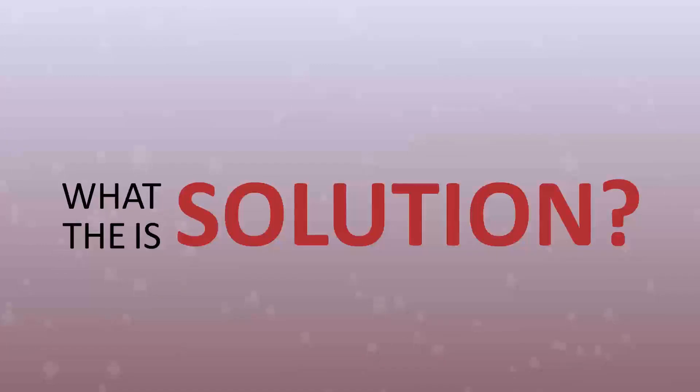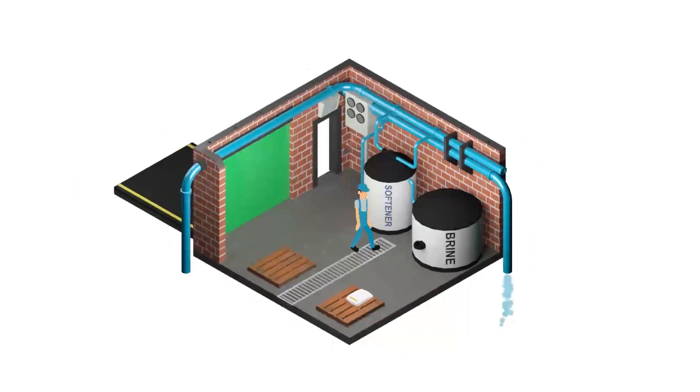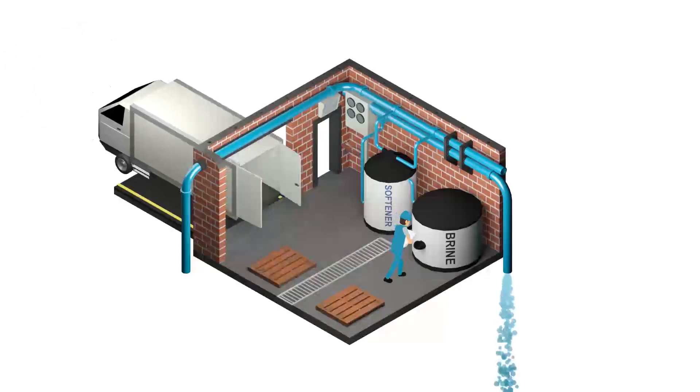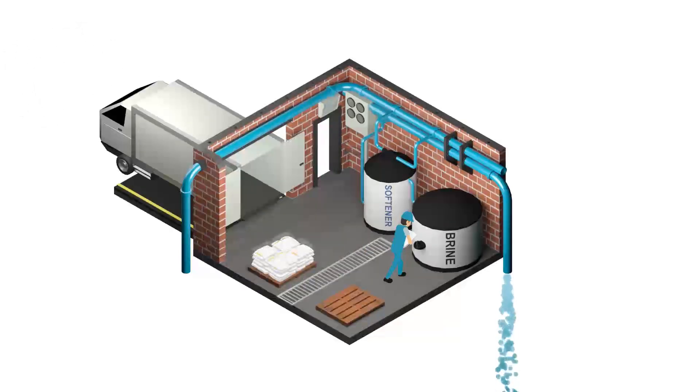Sticking your head in the sand and having no scale protection is equivalent to throwing money down the drain and can be dangerous. There are multiple products on the market for users to choose from to protect their heating system from scale. However, most of them are not very effective and the only real option until recently was to use a water softener.